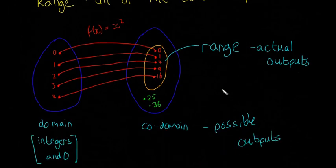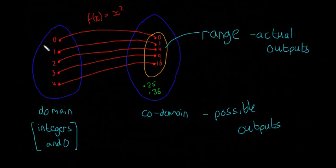It doesn't really matter what the function is. I just wanted to get this point across that the domain are the possible inputs, the co-domain are the possible outputs, and the range are the actual outputs. So hopefully this example just clears that up.